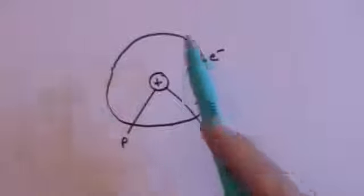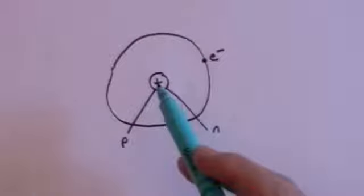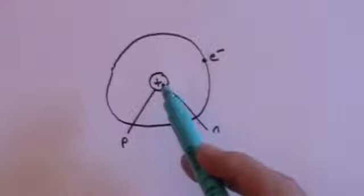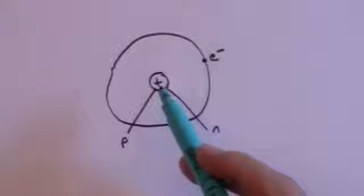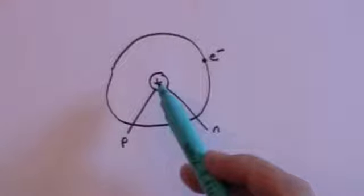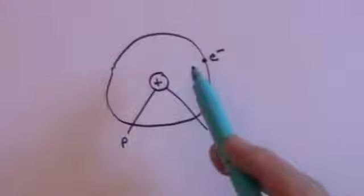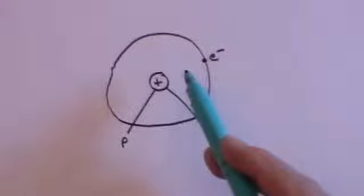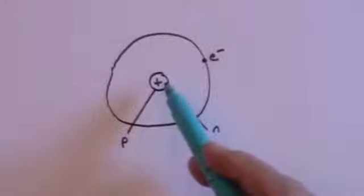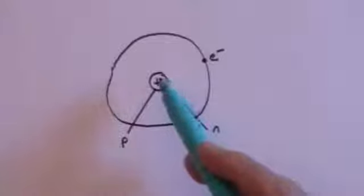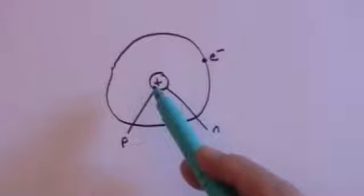There are two fundamental problems with this model. The first is: if the nucleus consists of lots of positively charged protons, how can it be stable? Because positive charges repel — like charges repel, unlike charges attract. So all these positively charged protons should be pushing one another apart and the whole nucleus should simply self-destruct. But that clearly doesn't happen, and the solution is that there must be a force which holds those protons together, greater than the force trying to drive them apart.